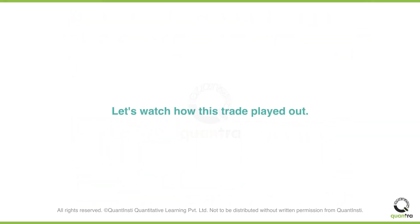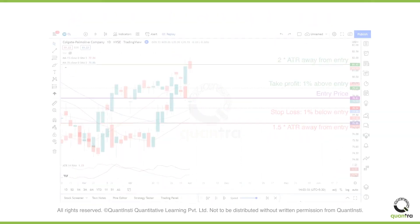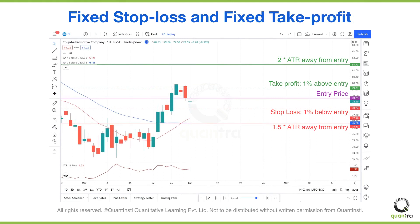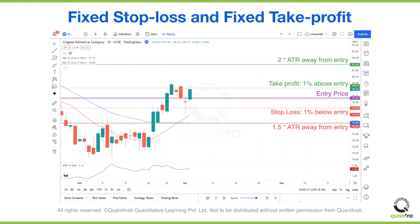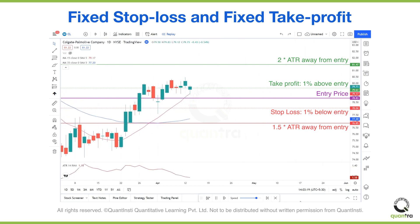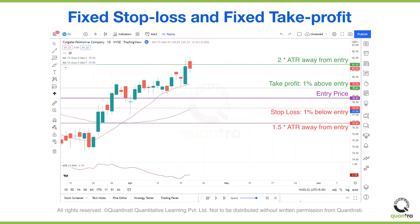Let's watch how this trade played out. As you can see, the stop loss based on the fixed percentage approach did get triggered. However, the stop loss set using the ATR value still seems to hold. Moving on, it also seems like we did hit our target.